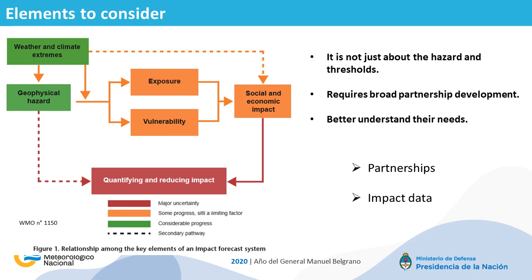It is not just about the hazard and thresholds. This figure represents the relationship among the key elements of an impact forecast system. There are three possible pathways towards estimating and assessing impact for a given hydrometeorological hazard. The solid arrow represents the modeling approach, where each element is explicitly calculated — the ideal world. This requires detailed data of vulnerability and exposure. The dotted orange arrow relates a more subjective approach, where qualitative information of impact is collected from expert partners, representing the sum of their experience and allowing estimation of impact from the magnitude of the hazard.